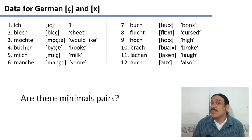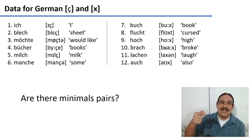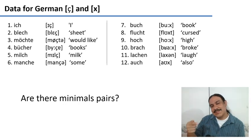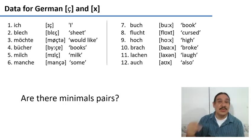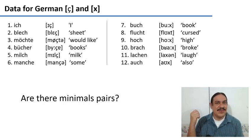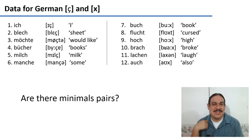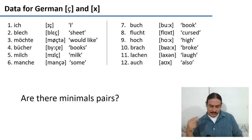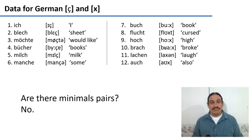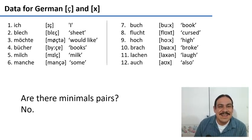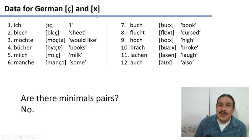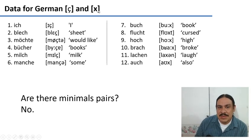So go through the data and try to figure out if there is a minimal pair for these two sounds — two words where one has the palatal fricative, one has the velar one, but that's the only difference between them. Are there any minimal pairs? Please pause the video. No minimal pairs. It looks like maybe these two are not different phonemes. Maybe they are allophones of the same phoneme.